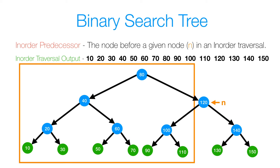Now if our n was 120, then all the nodes in this rectangle are going to be smaller than 120, but only one is going to be 120's predecessor — from our output, that value is 110. If 120's left subtree is not empty, then all those nodes are just smaller than 120, but only one can be the closest. That's going to be the largest node in 120's left subtree, because it's smaller than 120 but also closest to it. So ultimately, we're finding the maximum element in 120's left subtree, which is our node with value 110.